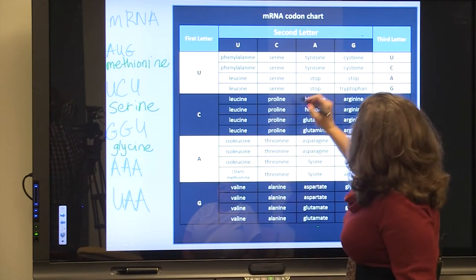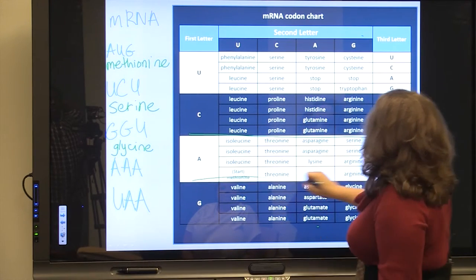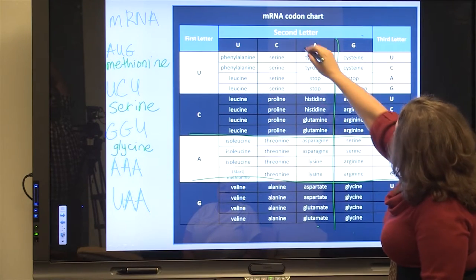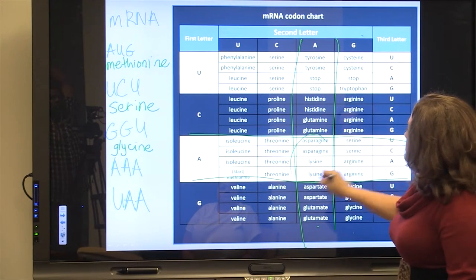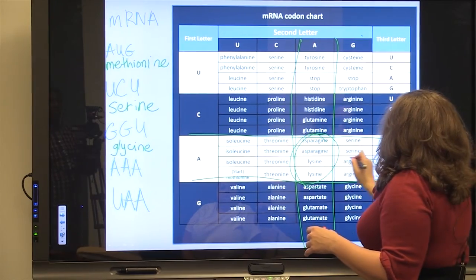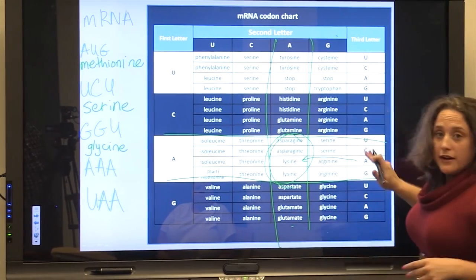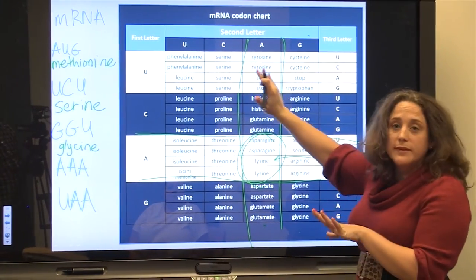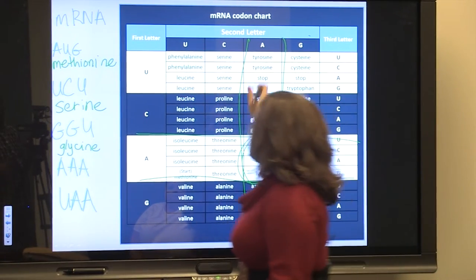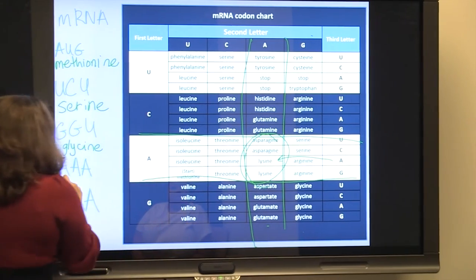And, A in this row somewhere, A in this column somewhere, so somewhere where the row and column meet. And, trace over the A for the third letter, your chart's always going to be set up like this. And, I'm always going to tell you, first letter, second letter, third letter. We came up with lysine.